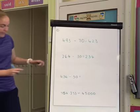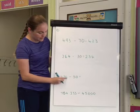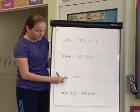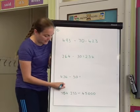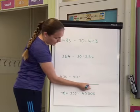Then we start to get a little bit trickier. This one, 436 take away 50. The 50 is bigger than the 30, so we're going to need to bridge the tens. And I always picture that on my number line.